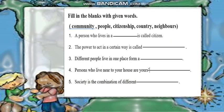Fill in the blanks with the given words: community, people, citizenship, country, neighbors. A person who lives in a country is called a citizen. The power to act in a certain way is called citizenship. Different people living in one place form a community. Persons who live near your house are your neighbors. Society is the combination of different people.